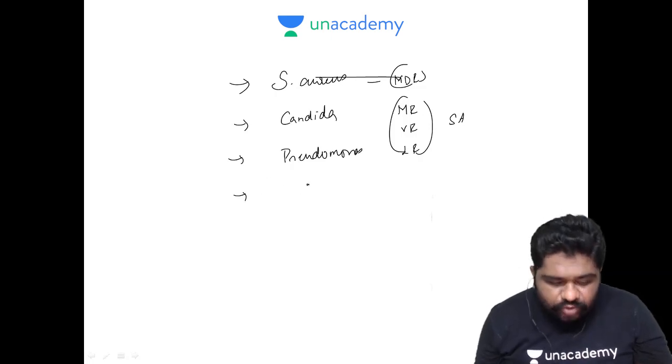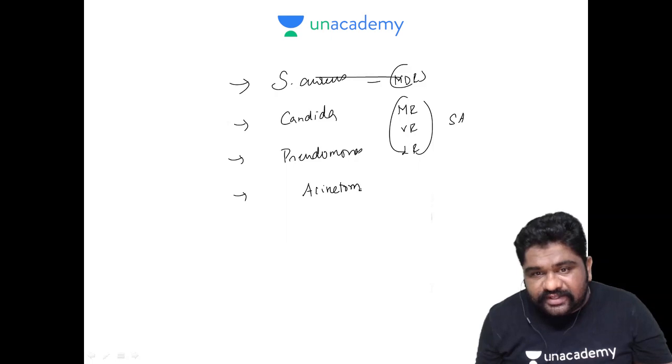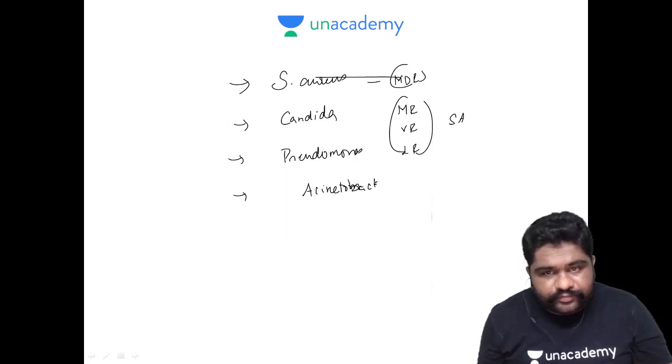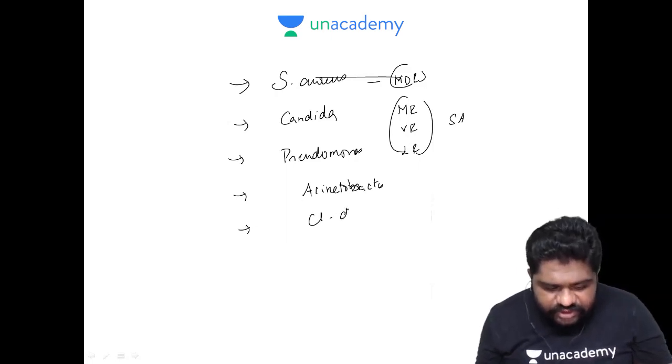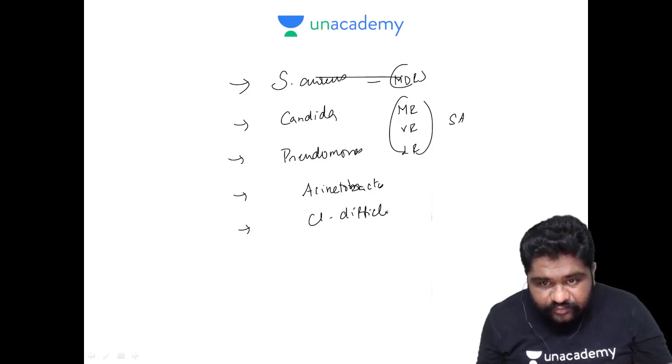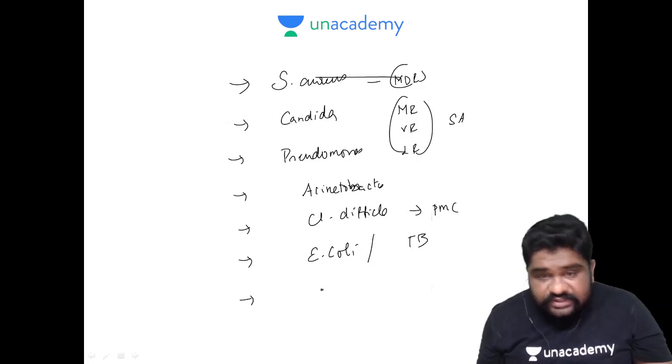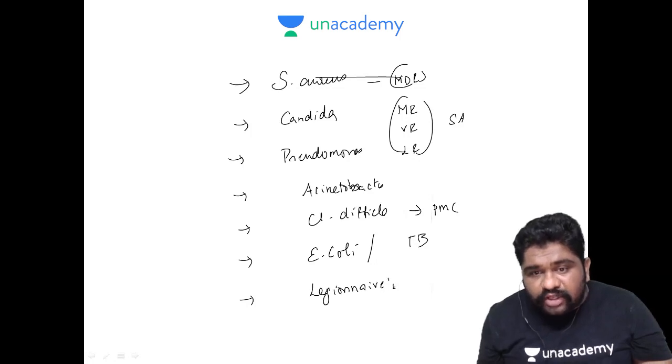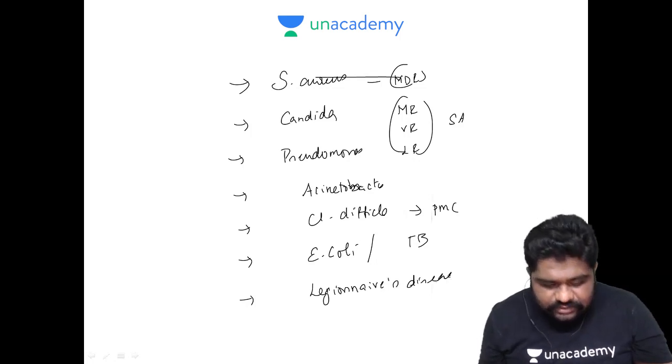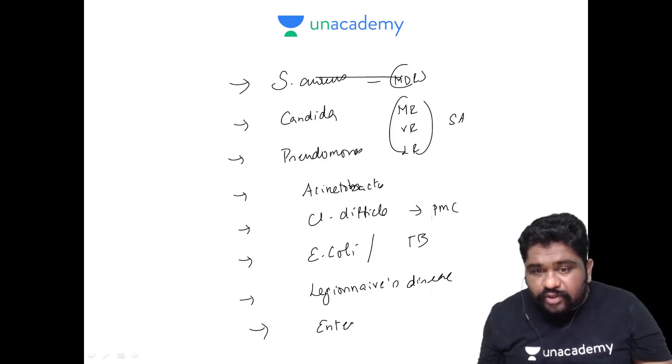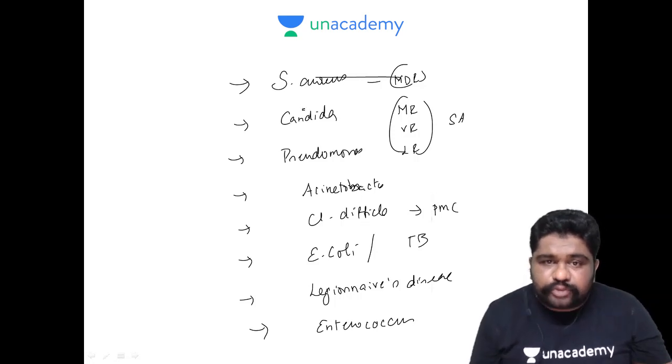Next you can look for Acinetobacter baumannii. The next in line can be Clostridium difficile, which can cause pseudomembranous colitis. You can have E. coli along with TB. If it is ventilator related and happening through air conditioners, you can also think about Legionnaire's disease. Then you can focus on Enterococcus. According to statistics, these are the most common organisms you should be scared of.